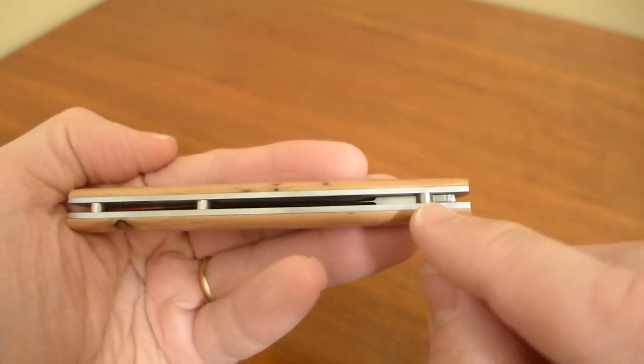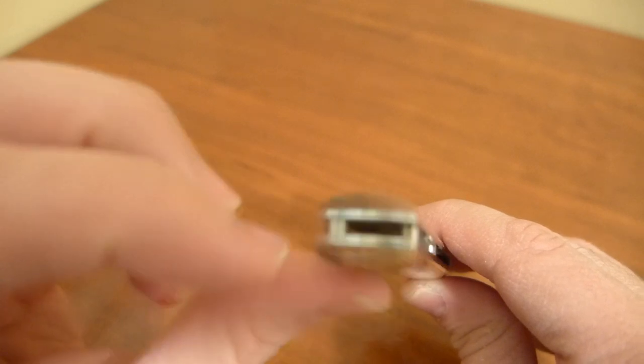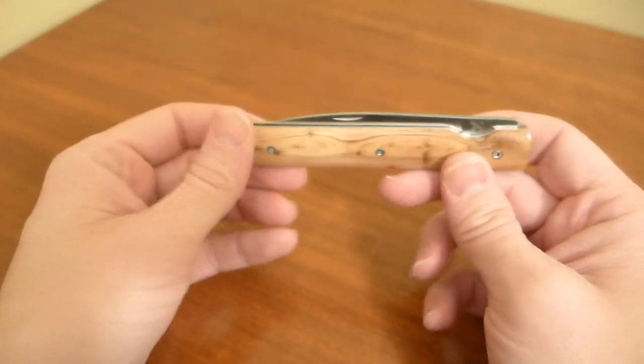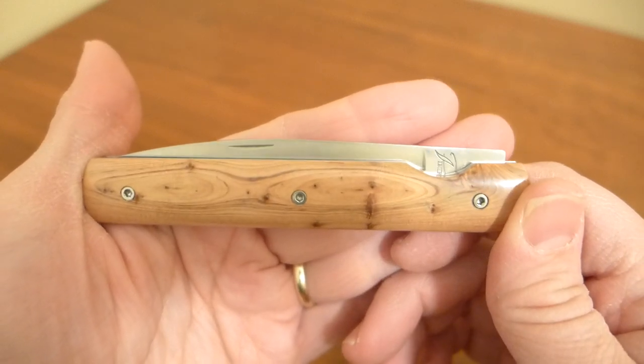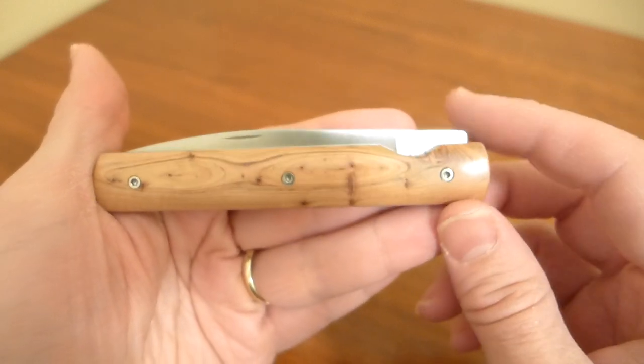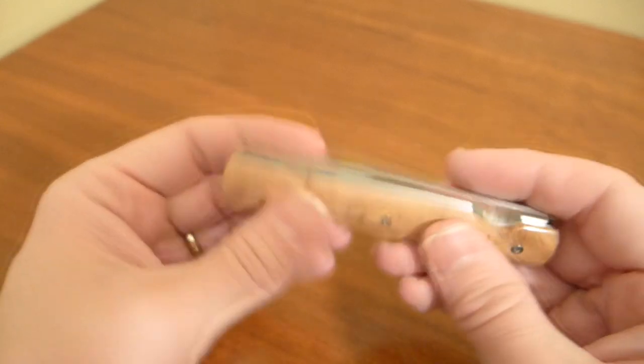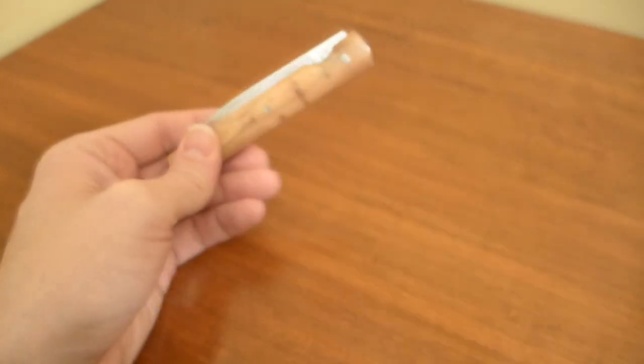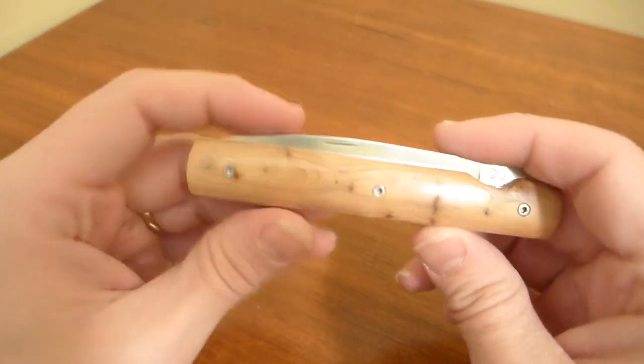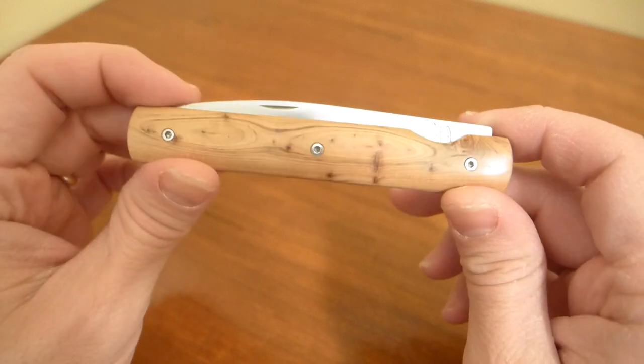You can see here there's a stop pin, and then there are one, two, and then surprise, three backspacers. I got a model made with juniper, which is a wood that has a very interesting smell to it. When you handle this knife your hands come away smelling peppery.